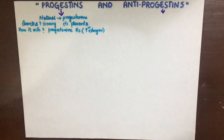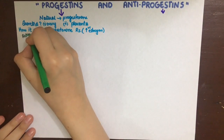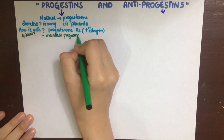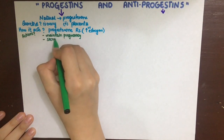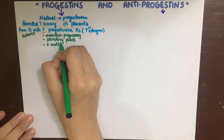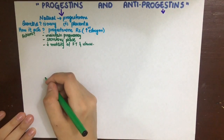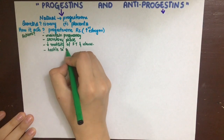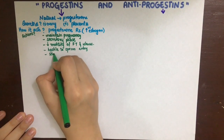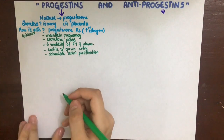Let's see some actions of progesterone. It maintains the pregnancy by maintaining the uterine endometrial layer. It also acts in the secretory phase of the menstrual cycle by maturing and proliferating endometrial glands. It decreases fallopian tube motility and decreases uterine contractions, thus promoting pregnancy. It is hostile to sperm penetration and causes the cervical mucus to become thick, viscous and acidic. It stimulates acinar proliferation in the breast and prepares the mother for milk secretion.